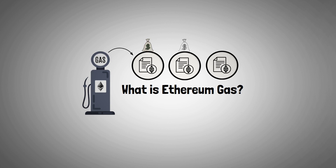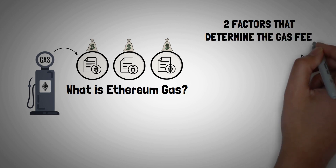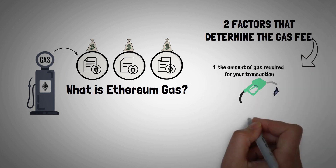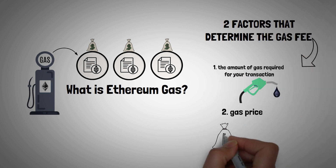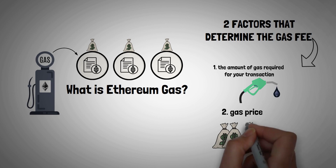It's like paying for a bus ticket to travel around Ethereum city. The fee depends on two factors: the amount of gas required for your transaction, and the gas price, which determines the priority of your transaction being processed. This is like choosing between a regular bus or an express bus. The higher the gas price, the faster your transaction gets included in the next block.